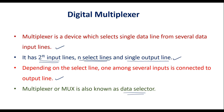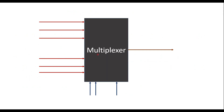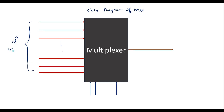Now let us see the block diagram of multiplexer. So here I will assume that it has 2 power n inputs. This n indicates the select lines. It has n select lines and it has only one output.